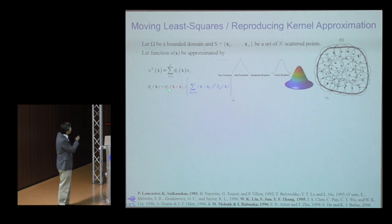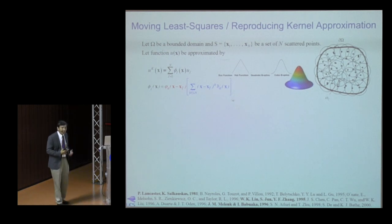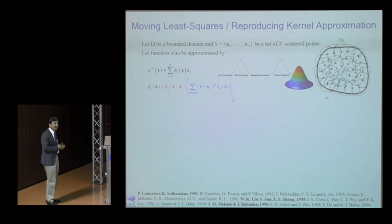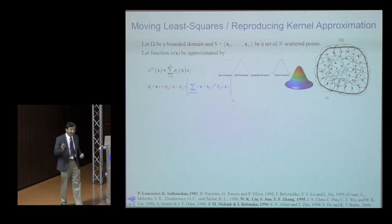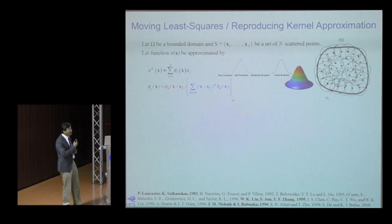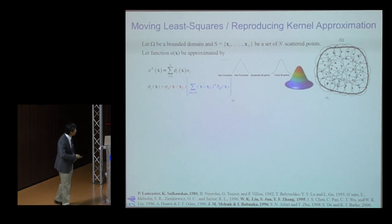For example, I can use a C⁵ quintic spline and still choose to use a linear basis. This is a very nice feature for modeling extreme events: I can stick with linear bases, get the optimal convergence rate in L² norm, and vary the continuity — using C⁰ near cracks or shear bands, and smooth functions elsewhere.